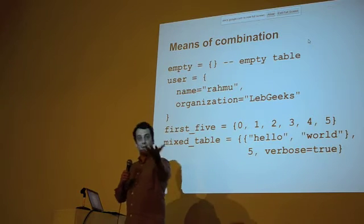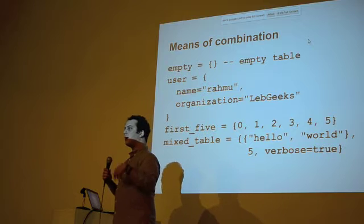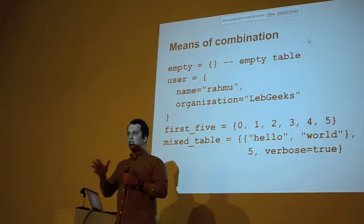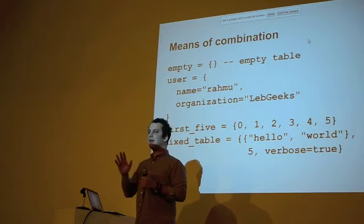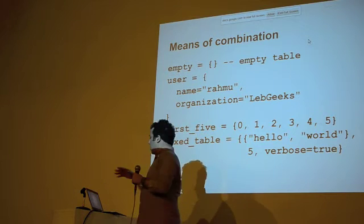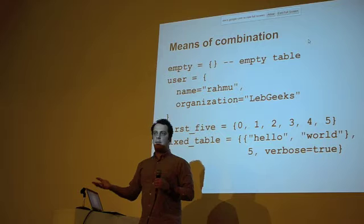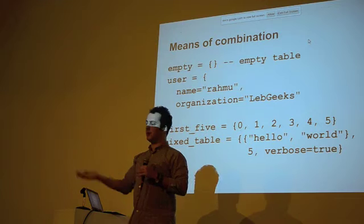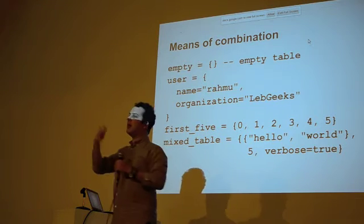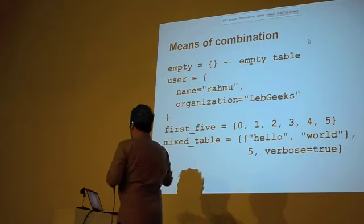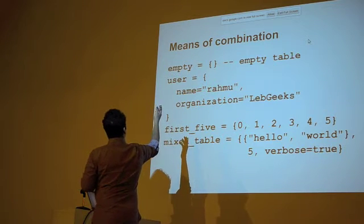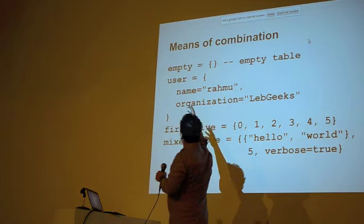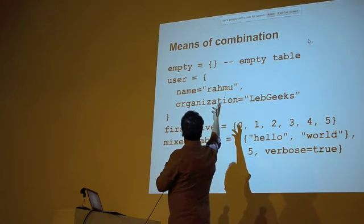And we're going to kind of look at it, if we can. But before that, let's look at the third point from SICP, which is the means of combination. How do I combine objects to create compound objects? And Lua has a very religious take on it. It's tables. Tables, tables, tables. Tables are the only means of combination. So, what are tables really? You're probably familiar with the concept. They're called associative arrays, hash maps, dictionaries. They're called so many different things. It's basically a set of key value pairs.